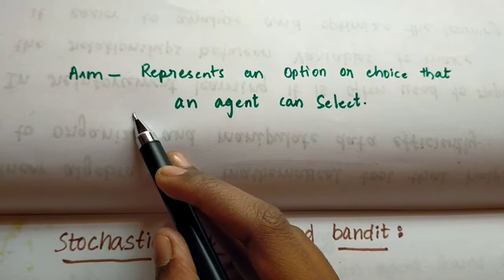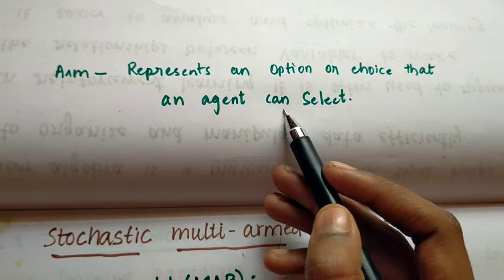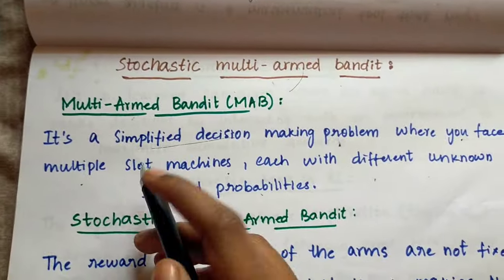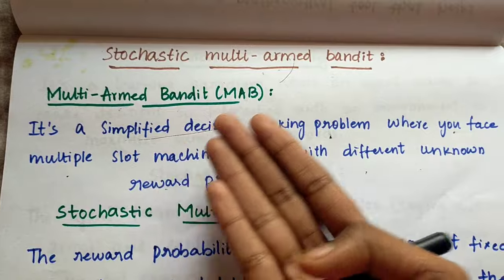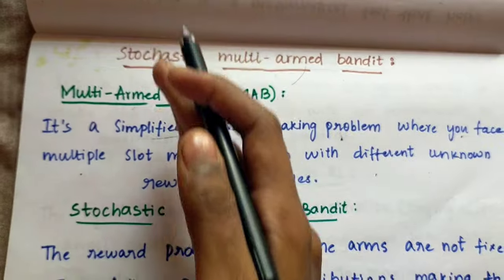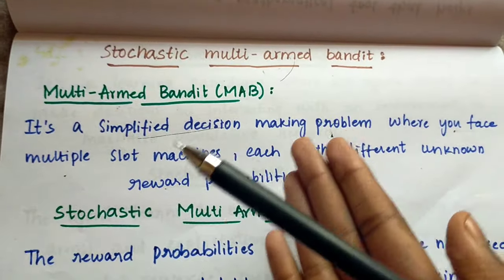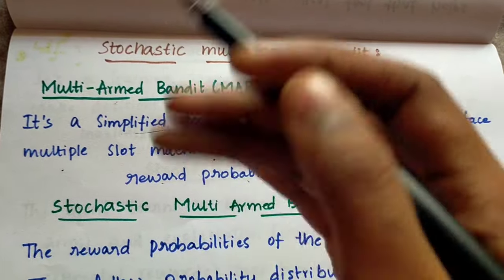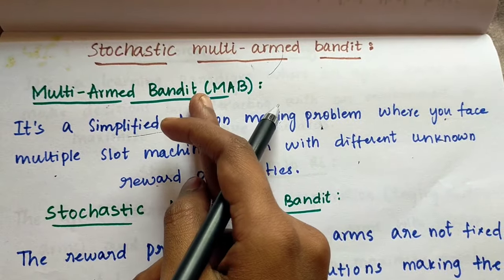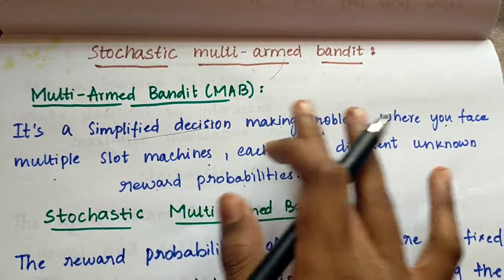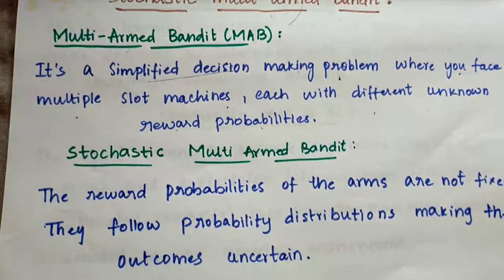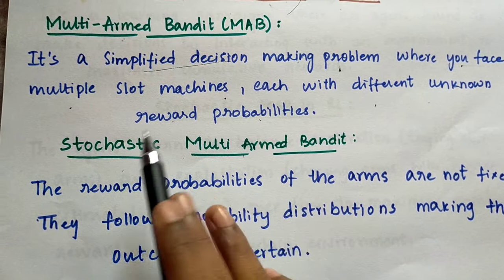First, what does 'arm' mean? An arm represents an option or choice that an agent can select. In this simplified decision making problem, you face multiple slot machines. If you're wrong on one, you can go to the other slot machine. Each slot machine has different unknown reward probabilities — if you win, you get a reward. This is multi-armed bandit.